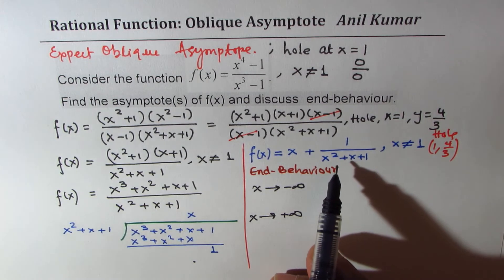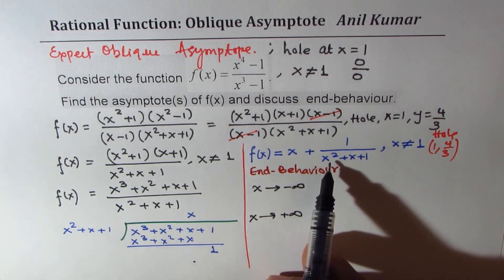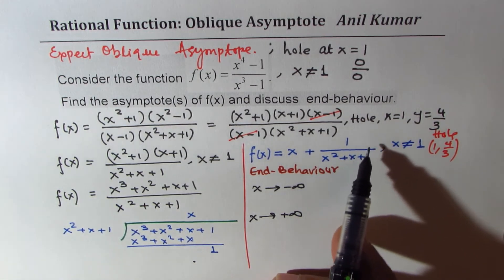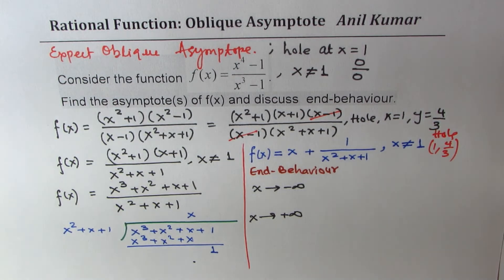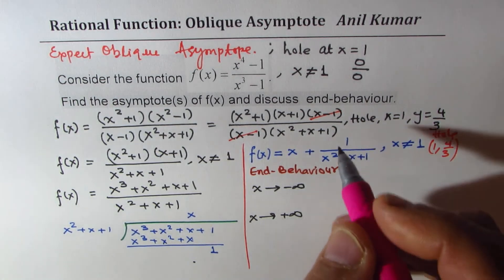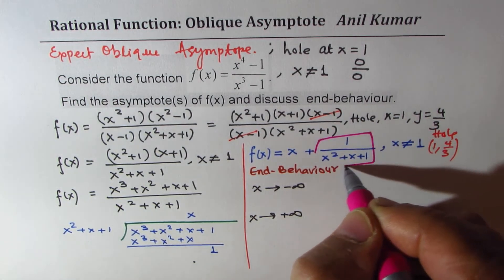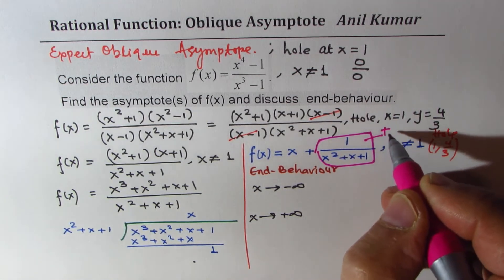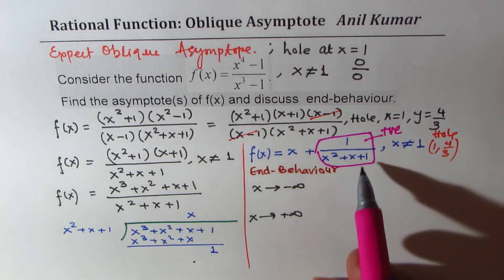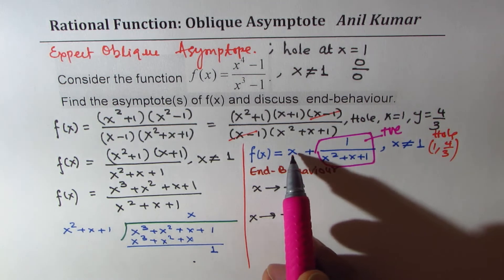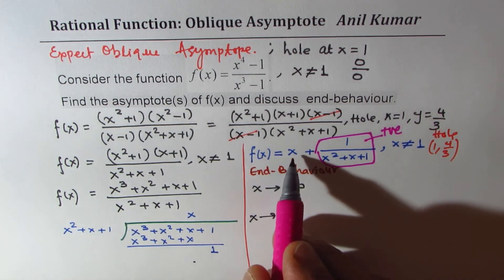Here in this function, we will see since we have 1 over x squared in the denominator, this part is always positive, correct? So this part here is always positive. Perfect. Since it is positive, it is above the line.